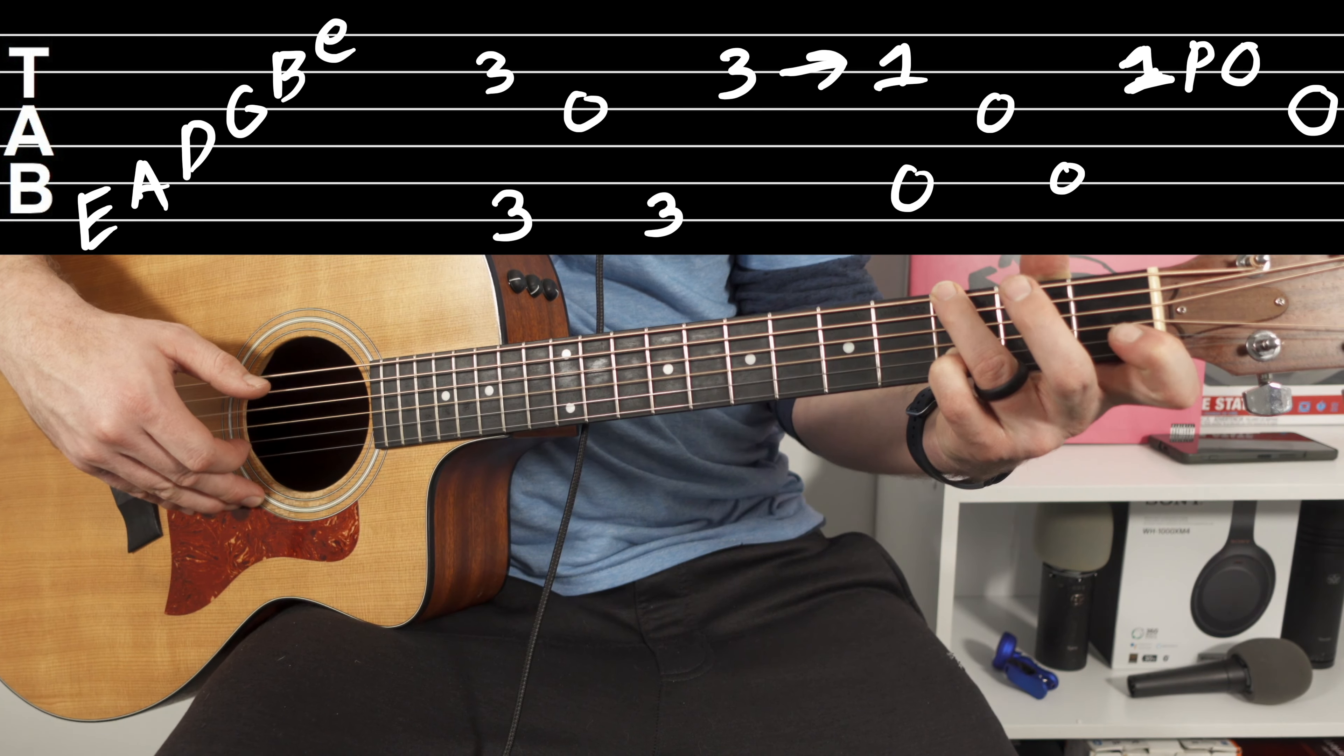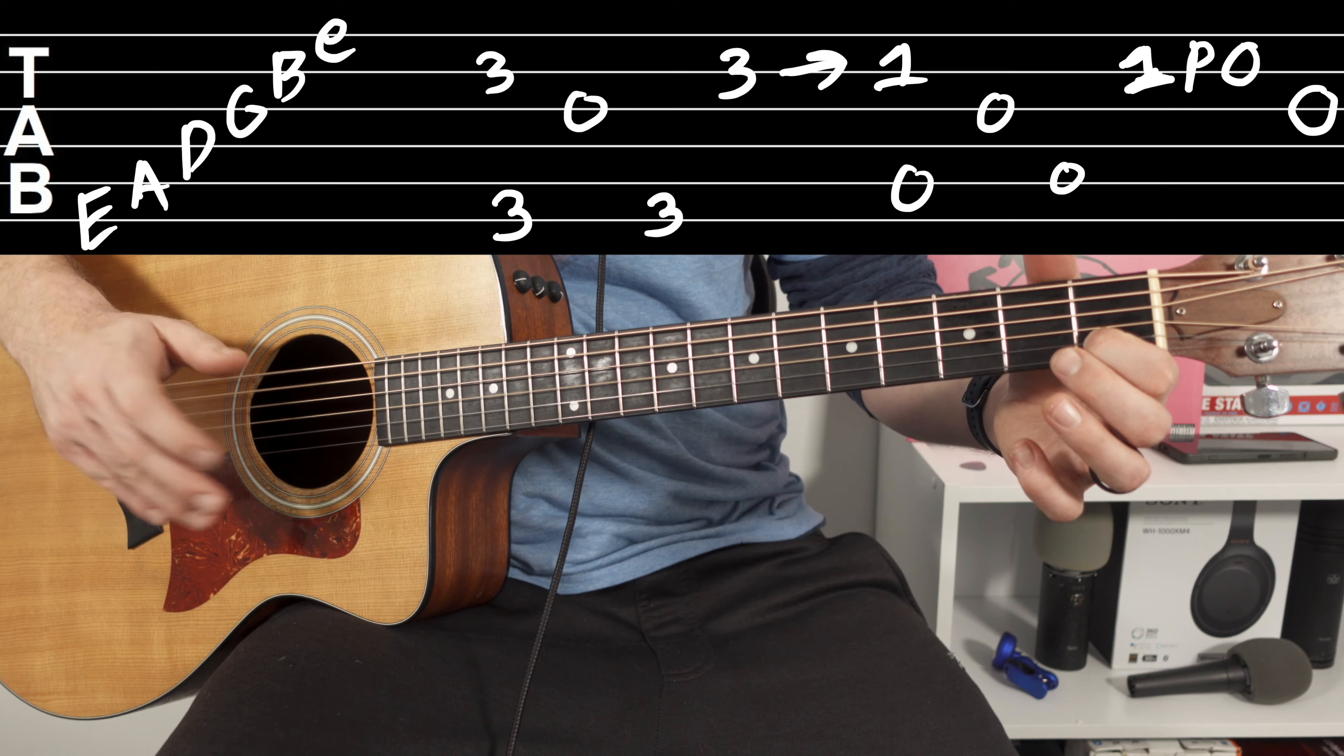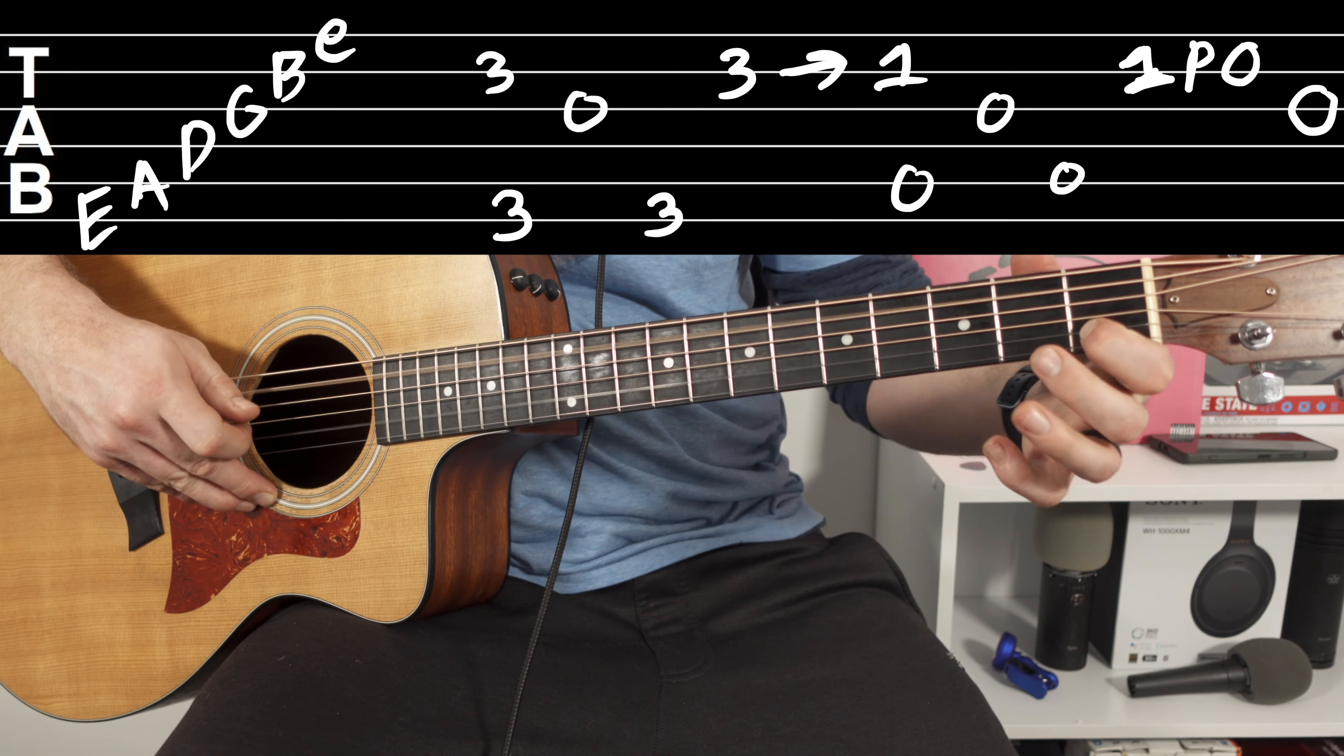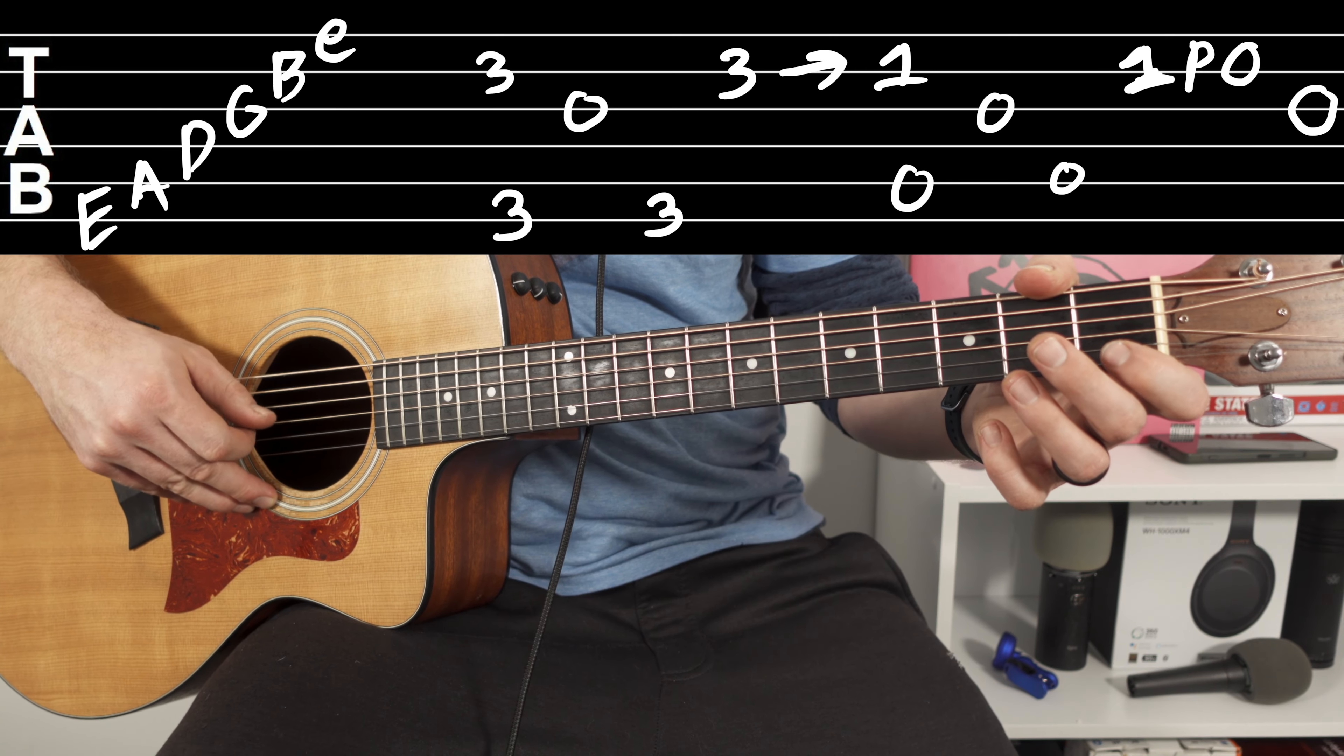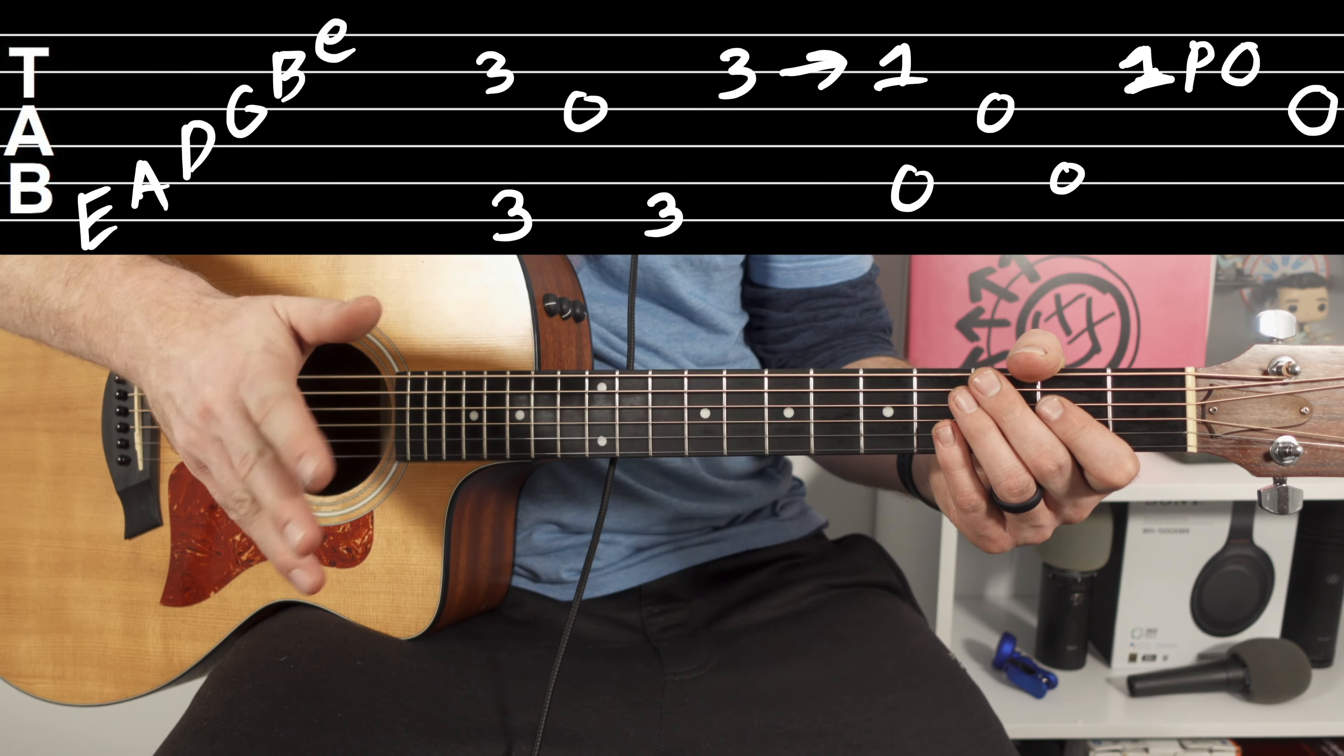Then you're going to go down to one on the B string and then zero on the A string and pluck those two together. You're doing a similar motion, but you're going to pull off the one and then just pluck the A after you pull off the G. I'm going to have a tab right here. This will make it easier so I don't keep fumbling my words.